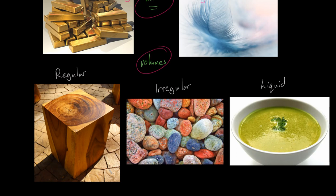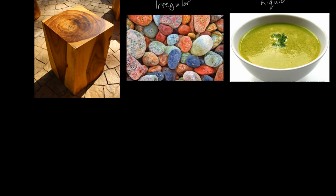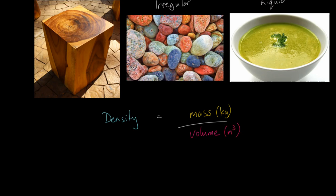In terms of the maths it's all relatively straightforward. There's one equation you need to know: density equals mass over volume. Mass is often measured in kilograms — that's the standard unit — although in a lab with something small you might use grams. Volume is measured in metres cubed as standard, but you might switch to centimetres cubed. So your density unit will be kilograms per metre cubed.